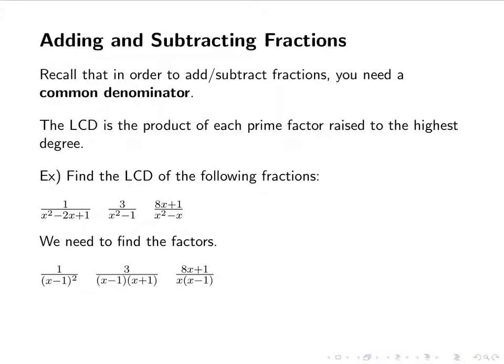I'm not going to spend too much time on actually doing the factorization here, because we talk about that in other sections. So I'm just going to go ahead and factor it for you. Our first one becomes x minus 1 squared, our second one is x minus 1 times x plus 1, and our third is x times x minus 1.